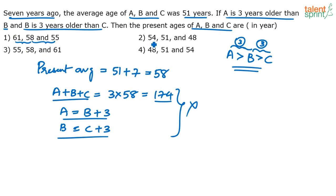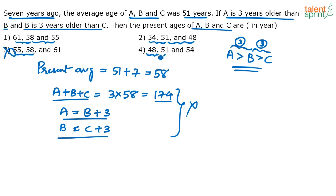Option 2: 54, 51, 48 — both differences are 3, and A is greater than B and B is greater than C. So this is also a possible answer. Option 3: 55 and 58 — A is less than B, so eliminate. Option 4: 48 and 51 — A is less than B, not possible, so option 4 is eliminated. The possible answers are option 1 or option 2.